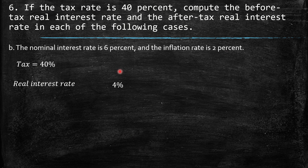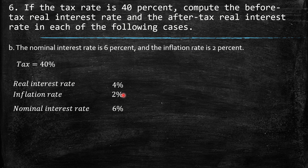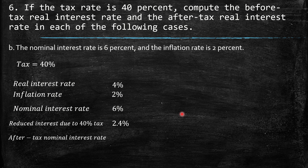Case B: The real interest rate is 6% minus 2%, so we have 4%. The inflation rate is provided as 2%, and the nominal interest rate is the sum of these two: 6% plus 2% equals 8%. The reduced interest due to the 40% tax is 0.4 times 6%, which gives us 2.4%. The after-tax nominal interest rate is 6% minus 2.4%, giving us 3.6%. The after-tax real interest rate is 3.6% minus 2% inflation, so we have 1.6%.